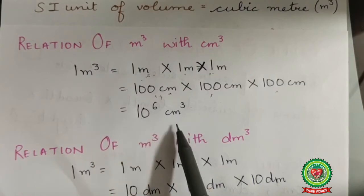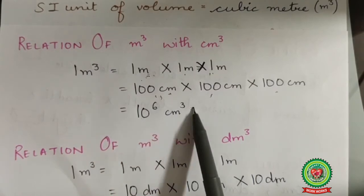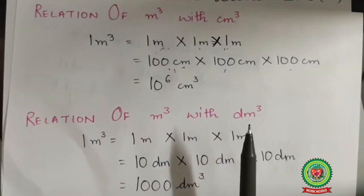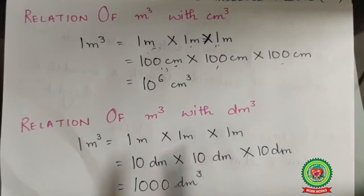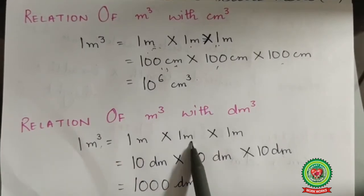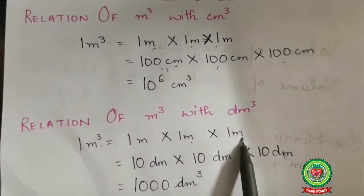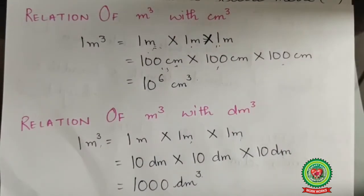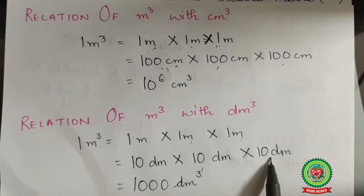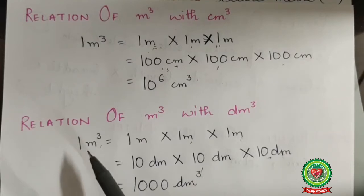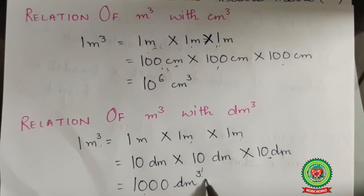So here we get 10 raised to power 6 centimeter cube. Next is the relation of meter cube with decimeter cube. 1 meter cube is 1 m × 1 m × 1 m. Since 1 meter equals 10 decimeters, we get 10 dm × 10 dm × 10 dm, giving the answer that 1 meter cube equals 1000 decimeter cube.